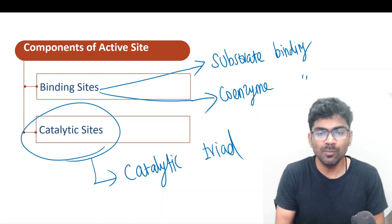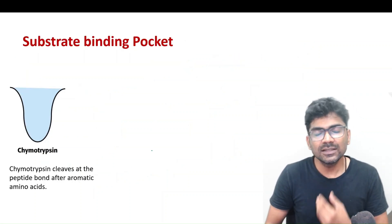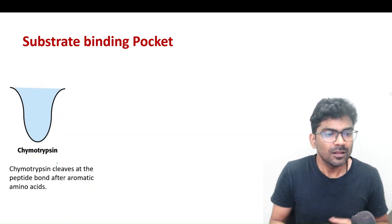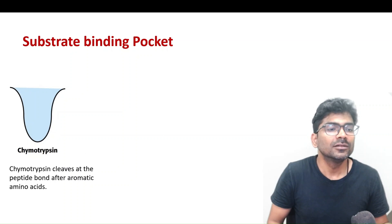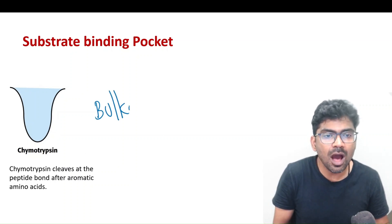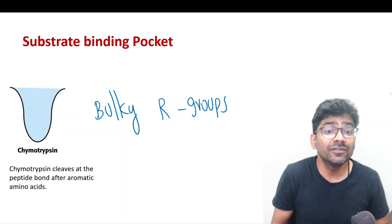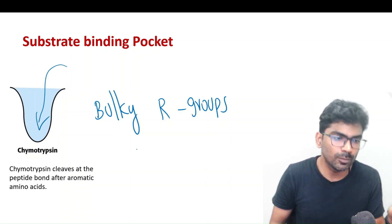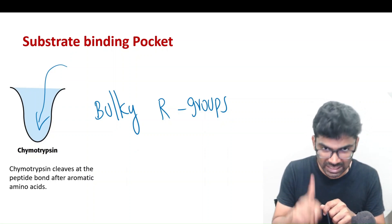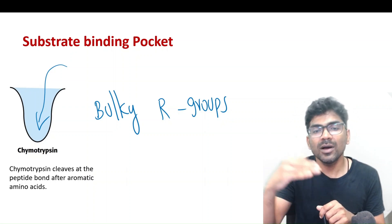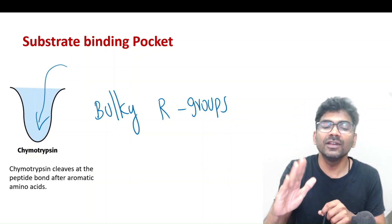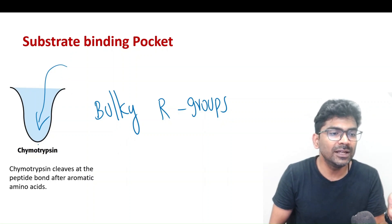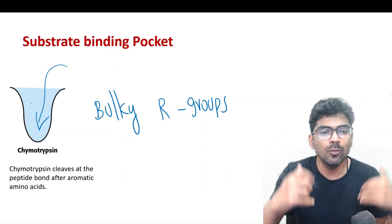Let us discuss the binding site of chymotrypsin. The chymotrypsin binding site is wide, so bulky R-group-containing amino acids like phenylalanine and tyrosine can easily fit into this substrate-binding pocket. Chymotrypsin will cleave on the carboxyl side — it cleaves after phenylalanine and tyrosine. The specificity of chymotrypsin is determined by the substrate-binding pocket, which is wide enough to allow bulky R groups.